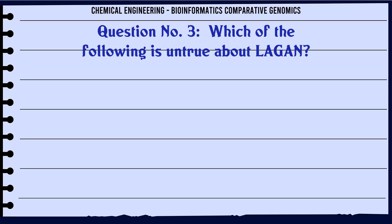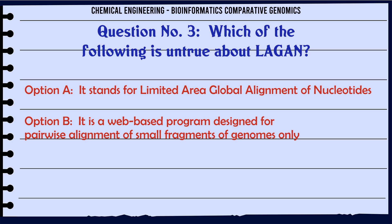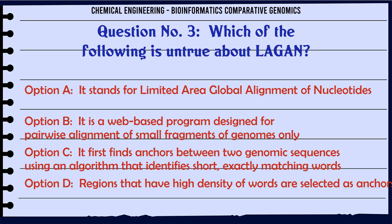Which of the following is untrue about LAGAN? a. It stands for Limited Area Global Alignment of Nucleotides. b. It is a web-based program designed for pairwise alignment of small fragments of genomes only. c. It first finds anchors between two genomic sequences using an algorithm that identifies short exactly matching words.